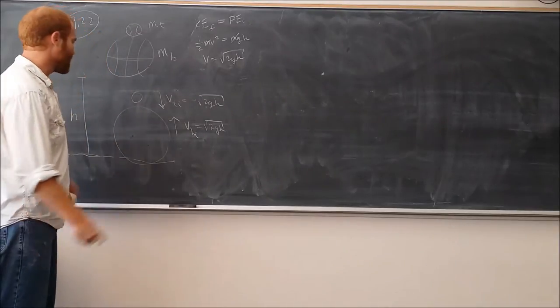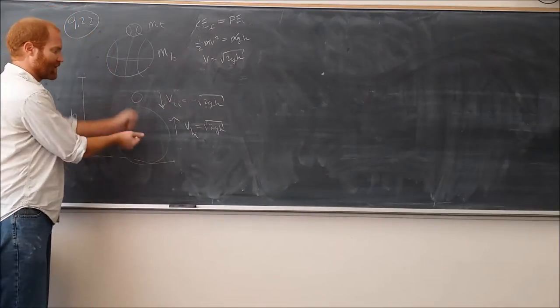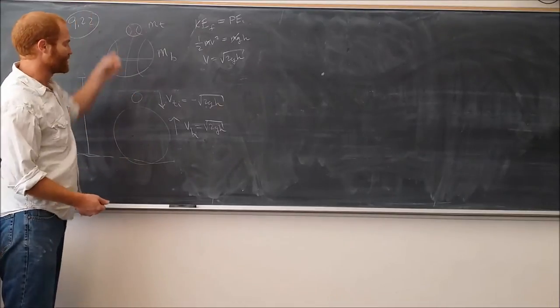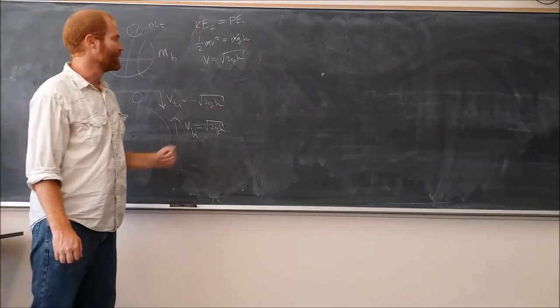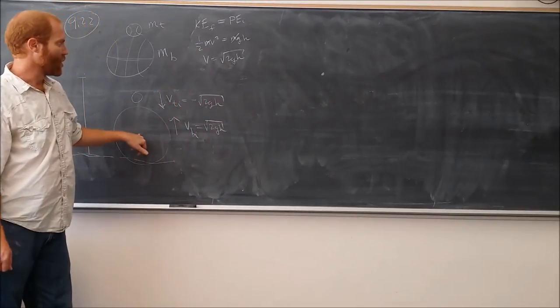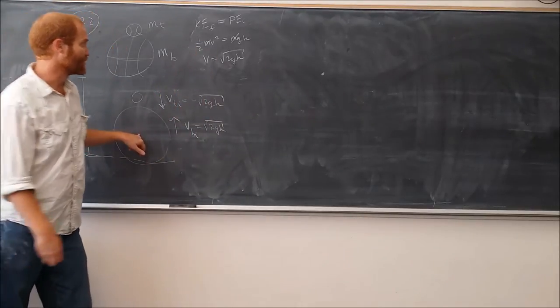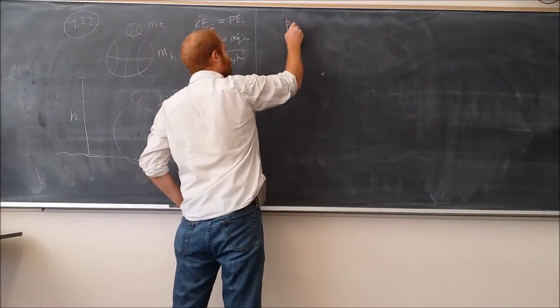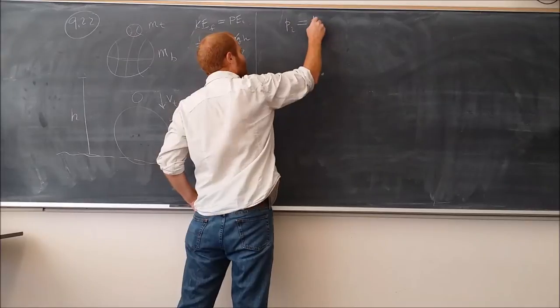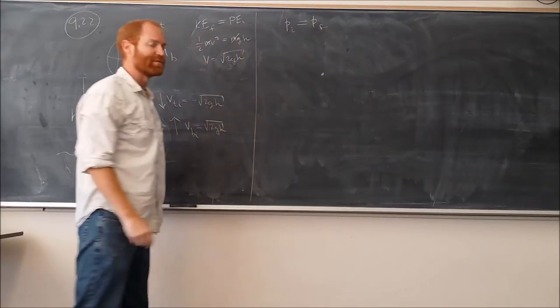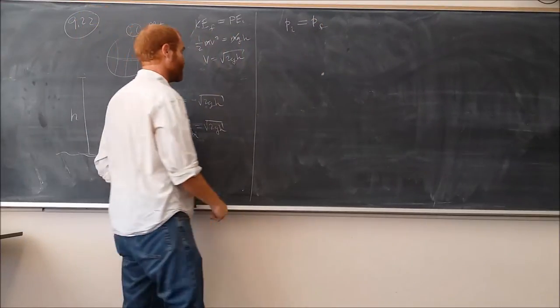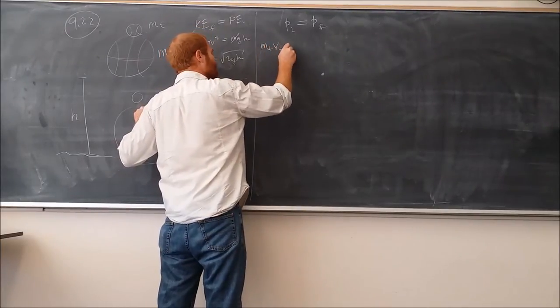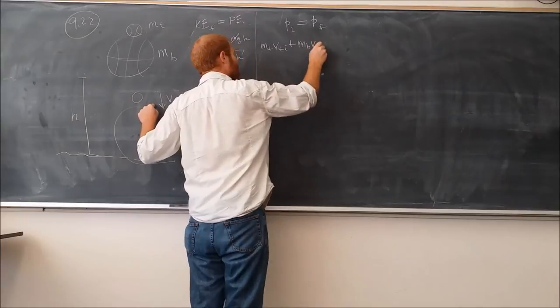In order to understand what happens after the two objects collide off of each other, because we need to figure out how high this ball rises, we know the velocity. We're going to figure that out using something similar to this. So we're going to use conservation of momentum to analyze the collision that happens. We'll say that the initial momentum of the system is equal to the final momentum. The initial momentum of the system is given by the mass of the tennis ball times its velocity, plus the mass of the basketball times its velocity.